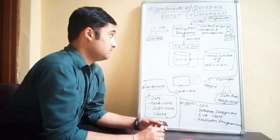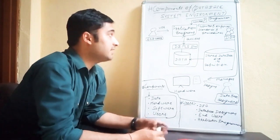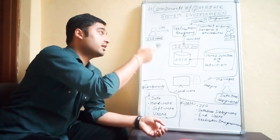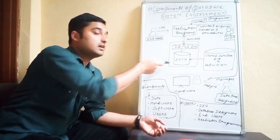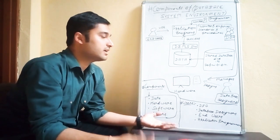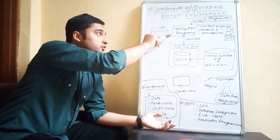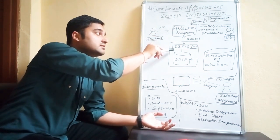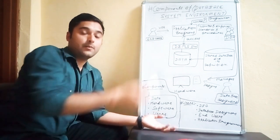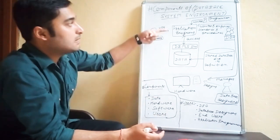For example, if you want to insert something into the database system, you will write some application program inside the database management system software, and then you are able to insert, update, delete, or retrieve data. You can write some application program inside the DBMS software, and then the actual data will be inserted, updated, or deleted — whatever you want to do.